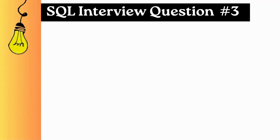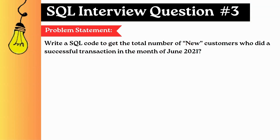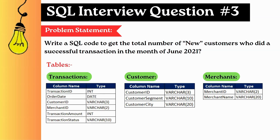This is the third video in this series. Today's problem statement is: write a SQL code to get the total number of new customers who did a successful transaction in the month of June 2021. These are the tables using which we have to write the SQL code for the above problem statement. Let's jump to MySQL Workbench and create these input tables.